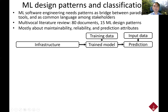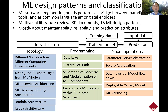Here is a very simplified structure of machine learning-based software systems: the infrastructure, a trained model with training data, and prediction or inference with input data. Based on this structure, we successfully classified the 15 patterns into three groups: topology, programming, and model operation.